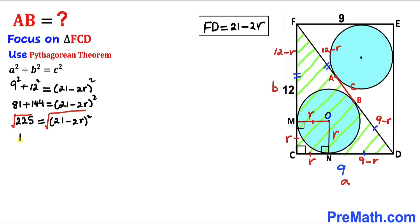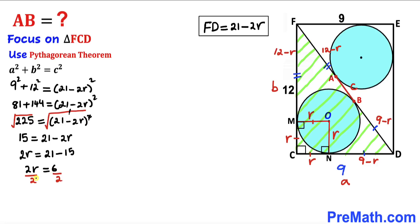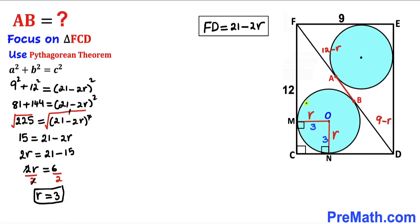The left-hand side becomes 15, and the right-hand side becomes 21 minus 2r. Moving terms: 2r equals 21 minus 15, so 2r equals 6. Dividing both sides by 2, our radius r turns out to be 3 units.